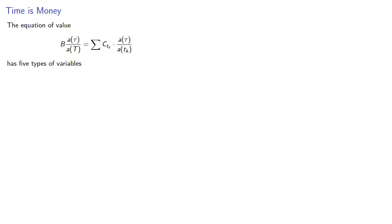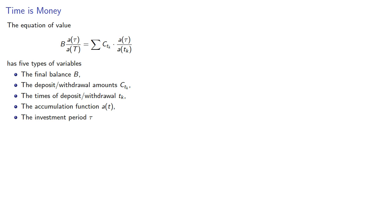The equation of value has five types of variables: the final balance B, the deposit or withdrawal amount C_tk, the times of deposit or withdrawal tk, the accumulation function a(t), and the investment period tau. Given any four, we can solve for the fifth.